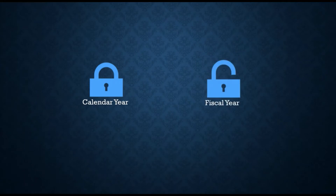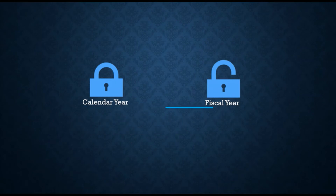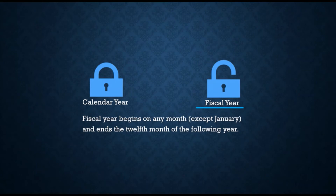The annual accounting period may be a calendar year or a fiscal year. A calendar year begins on January 1 and ends on December 31 of the same year. A fiscal year begins on any month except January and ends on the 12th month of the following year. For example, if the company started on July 1, 2020, the end of the accounting period covering one year of operation would be June 30, 2021.